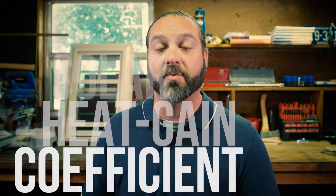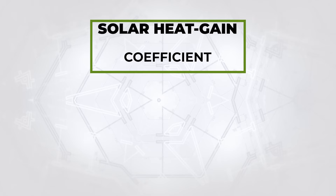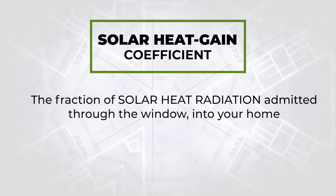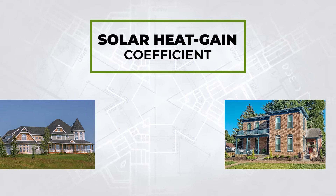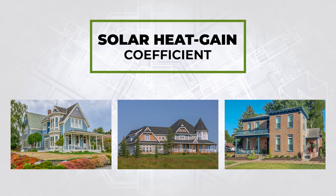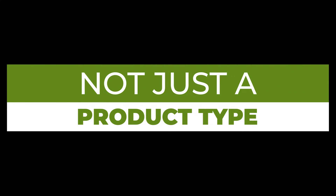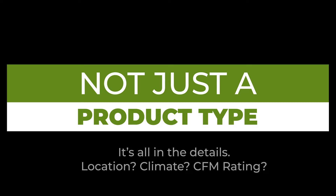Other factors can also contribute to the energy efficiency of your windows. The glass type and glazing used can have an impact on what's called the solar heat gain coefficient — the fraction of solar heat radiation emitted through the window into the home. The optimal number for solar heat gain coefficient will depend on the geographical location of your home and the climate of your home's location. This is why energy efficient windows are not just a type of window; it depends on the details and the location they are being installed.